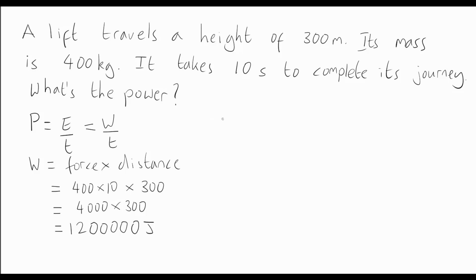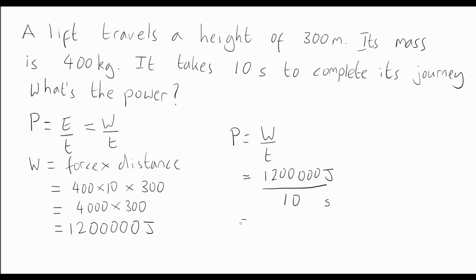Now we can use the power equation. Power equals work done over time: 1,200,000 joules divided by 10 seconds. Dividing by 10 simply removes one zero, giving us 120,000 joules per second. So the power is 120,000 joules per second, which in watts is 120,000 watts.